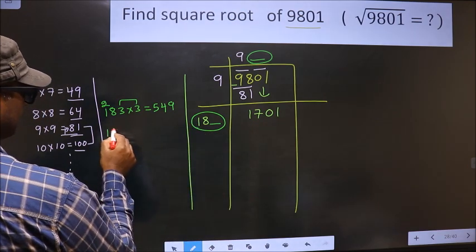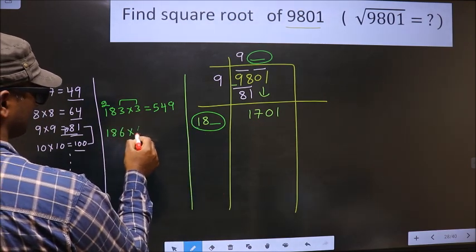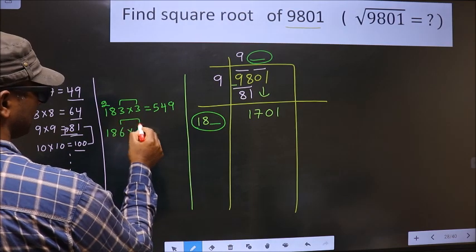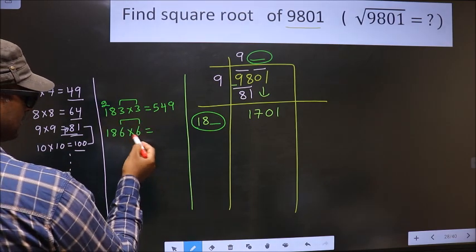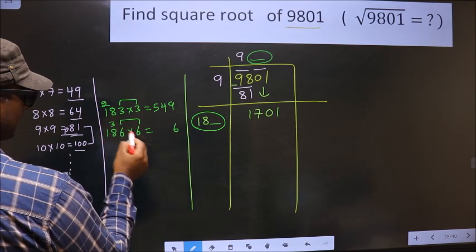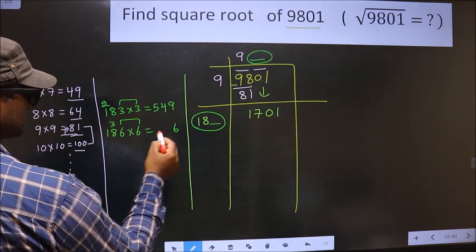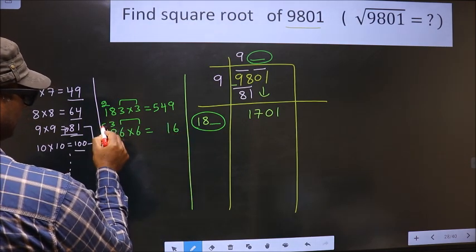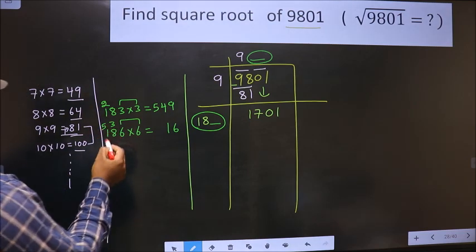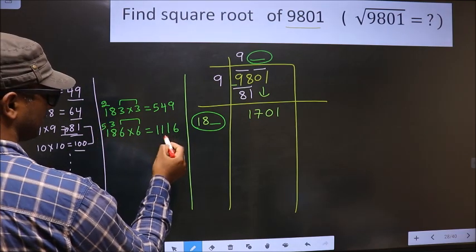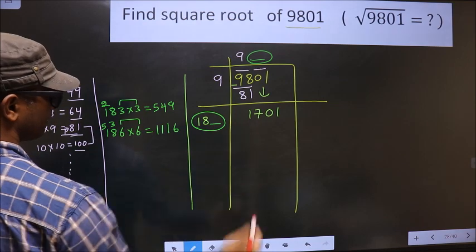So if we take 6, these two numbers should be same. 6 into 6, 36; 6 into 8, 48 plus 3 is 51. So 1 here, 5 here; 6, 1, 6 plus 5 is 11. Even this is also far.